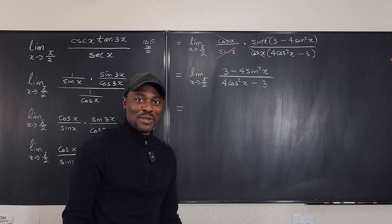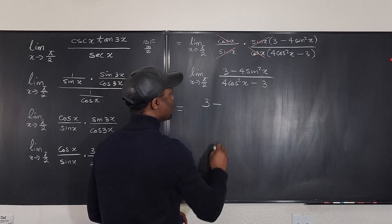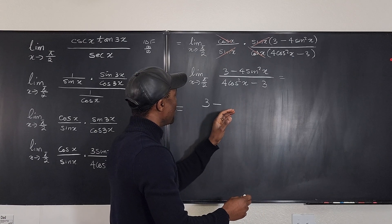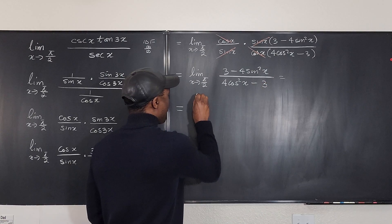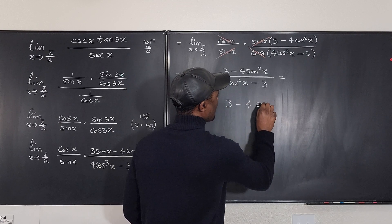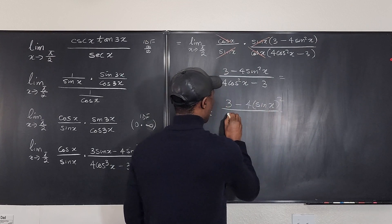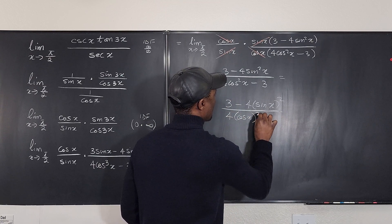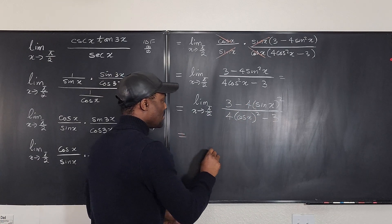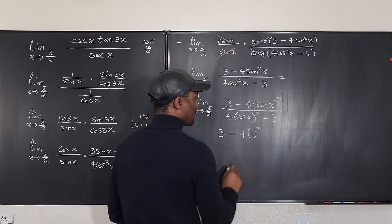Now L'Hôpital's rule has become useless because the indeterminate form is resolved. We can just plug in π/2 directly. The expression is (3 − 4sin²x) / (4cos²x − 3), where sin²x means the square of sin x.